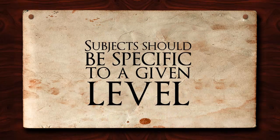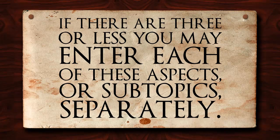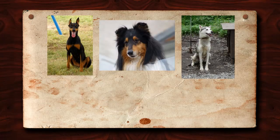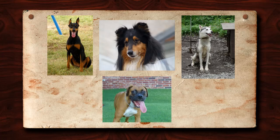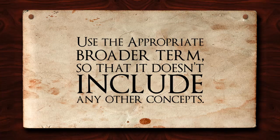The final point to keep in mind is that subjects should be specific to a given level, but not overly so. As a rule, when you are dealing with a body of materials that deals with multiple aspects of a single topic, if there are three or less, you may enter each of these aspects or subtopics separately. If there are more than three, you should round up to the next broader topic. So for example, if you had a body of materials about dogs which only included information on three breeds, access points for each breed could be used. But if there were four, you would need to use the access point for the broader concept of dogs. When rounding up, it is important to be sure that you use the appropriate broader term so that it doesn't include any other concepts.